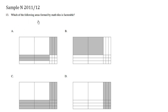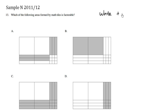Which of the following areas formed by math tiles is factorable? We have different math tiles here, and one thing to know for the provincial is that the color white means positive, so white is positive, and the shaded is negative for the provincial.